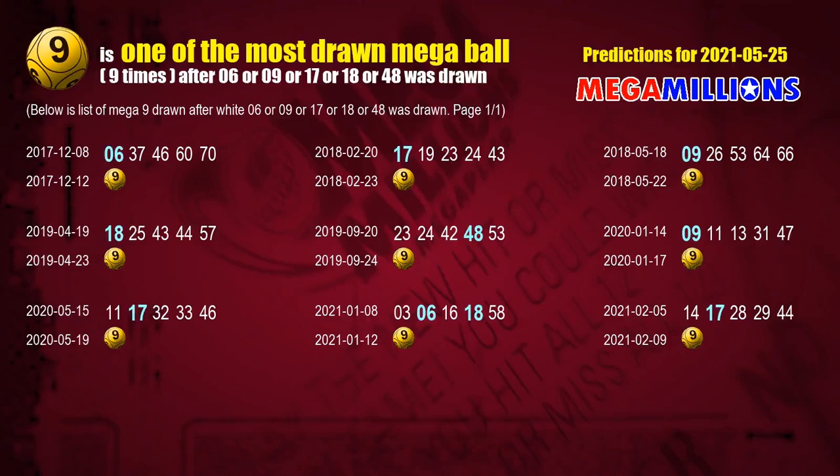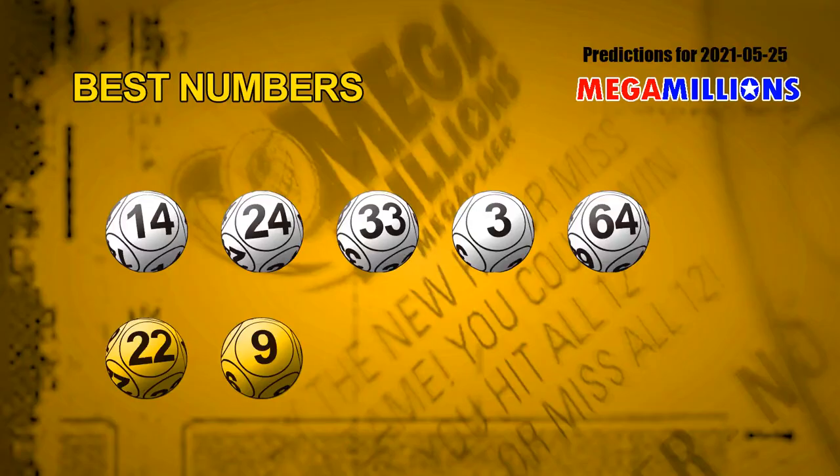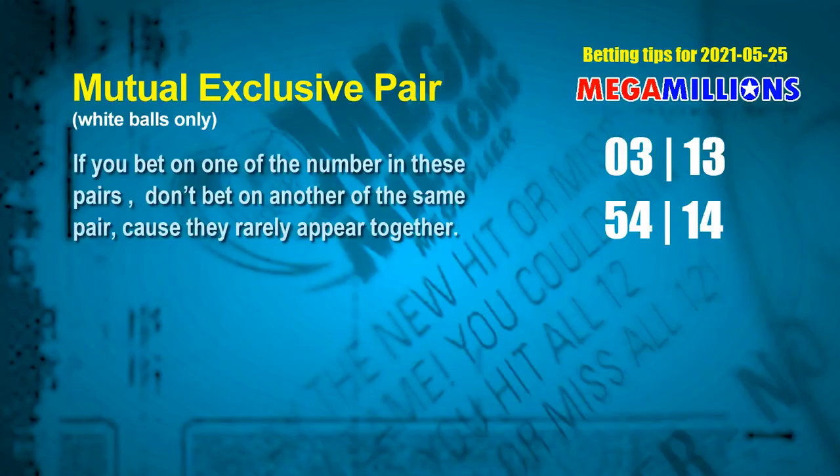We list the draw results after a draw with over one white ball winning number today. Now we have the most frequently following white ball units digits and Mega Ball numbers. The best five white balls for the next draw are 14, 24, 33, 03, and 64, and the best two Mega Balls for the next draw will be 22 and 09.